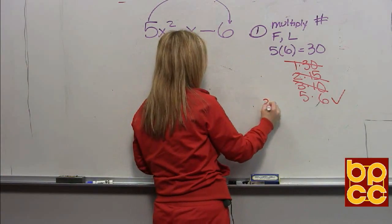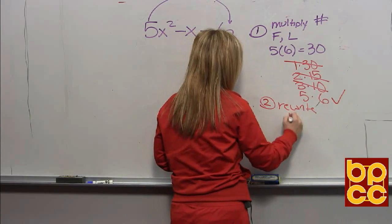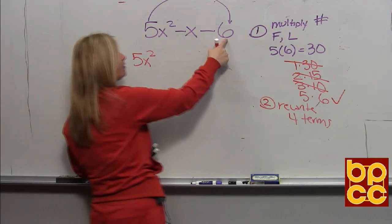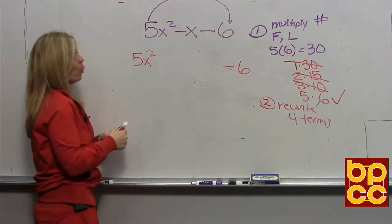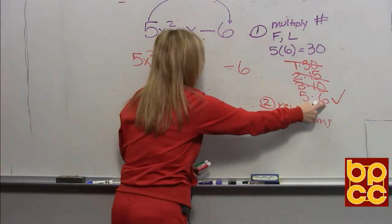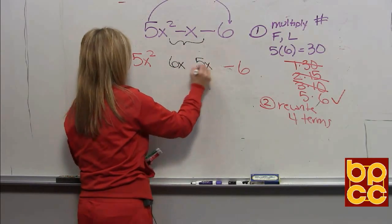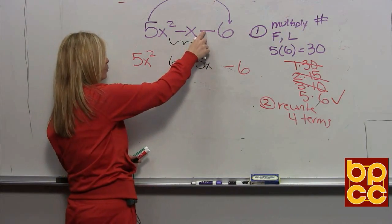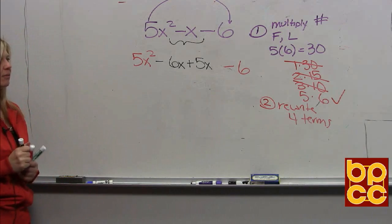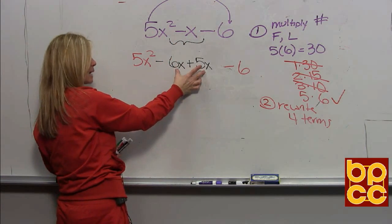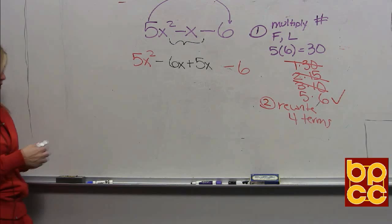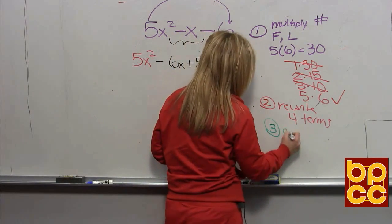Now we're in step two: rewrite our expression to have four terms. We're going to leave the first term, five x squared, and leave the last term, negative six. We are technically replacing this negative x — that middle term — with two terms. Because to make a negative x, you would need a six x and a five x, and we're going to subtract them, which means they're going to be different signs. This negative means the six gets the negative, and the five would have to be positive. So you've replaced this negative x with two terms that mean the same thing — negative six x plus five x would be negative x.